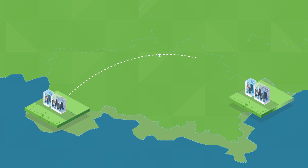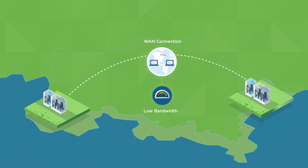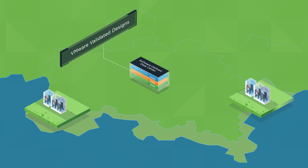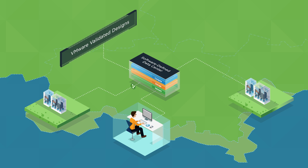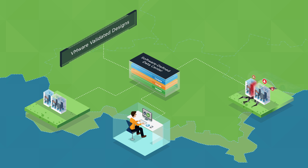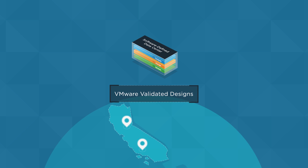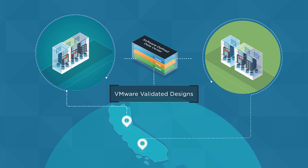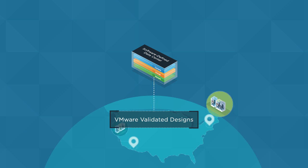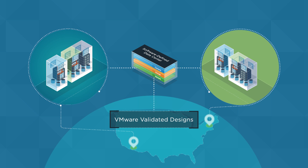Regions span longer distances and are interconnected by low bandwidth. Spanning the software-defined data center across regions protects against large-scale disasters such as tsunamis, hurricanes, and earthquakes. Examples of regions include separate data centers in northern and southern California or separate data centers on the west and east coasts of the United States.